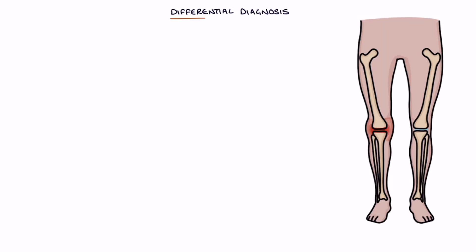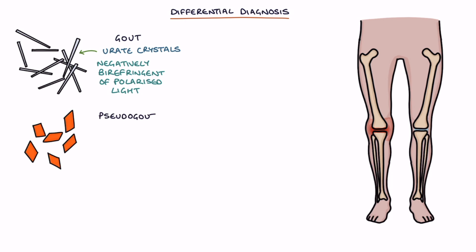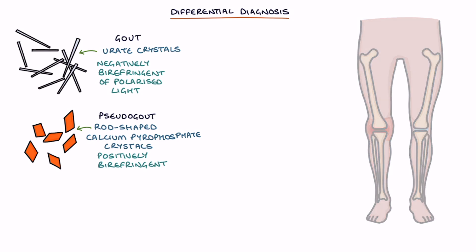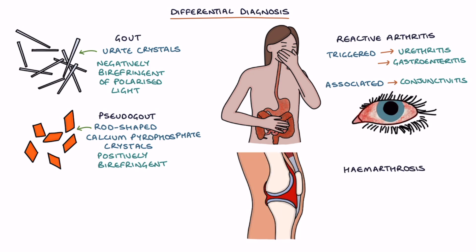The key differential diagnoses of a single, warm, swollen joint are: gout — the joint fluid will show urate crystals that are negatively birefringent of polarised light; pseudo-gout — the joint fluid will show rod-shaped calcium pyrophosphate crystals that are positively birefringent of polarised light; reactive arthritis, which is typically triggered by urethritis or gastroenteritis and is associated with conjunctivitis; and haemarthrosis, which is bleeding into the joint, usually after trauma.